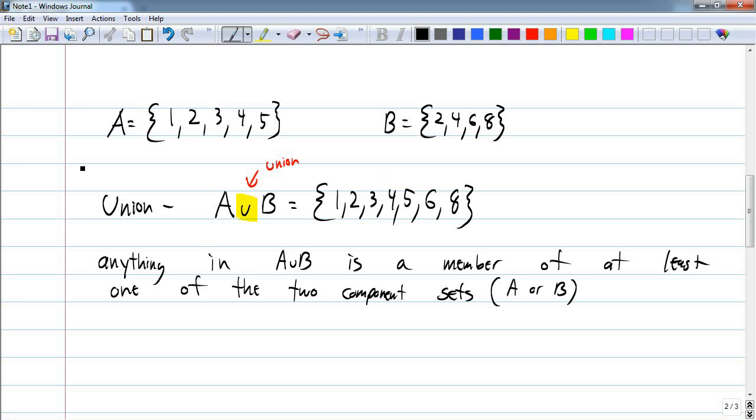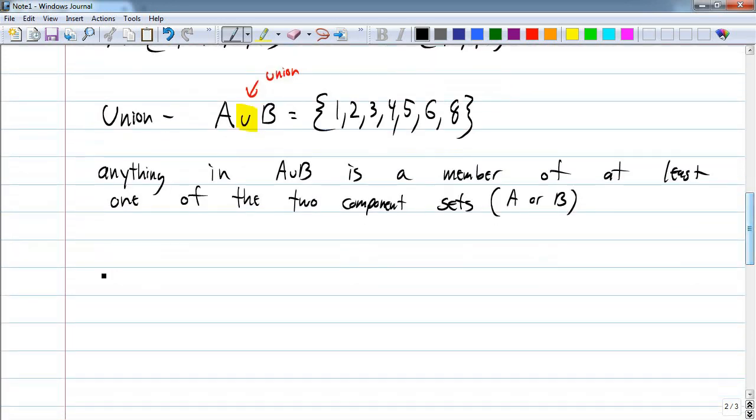Intersection is a little bit different. Intersection would be A horseshoe B, and this horseshoe stands for intersection. Anything in A intersect B must be a member...